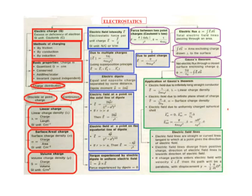Next is charge distribution. Charge distribution has two types: discrete or point charge, and continuous. The continuous type is further divided into three parts: linear charge, surface or aerial charge, and volume charge.